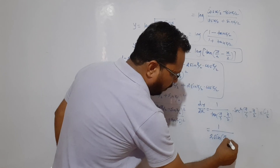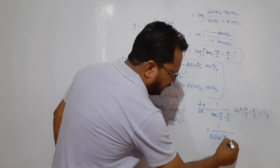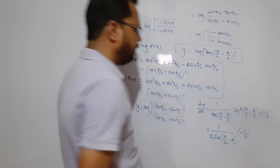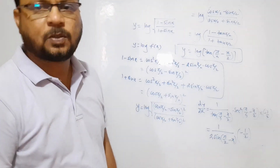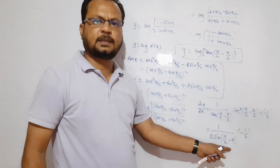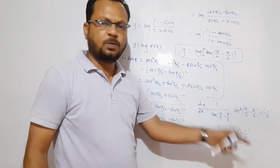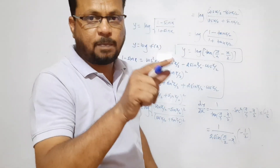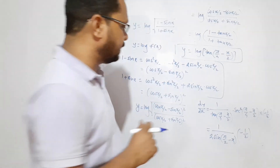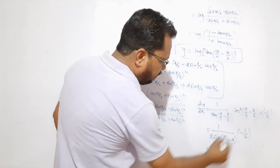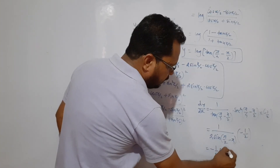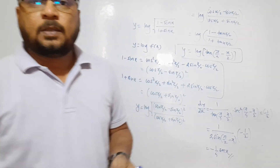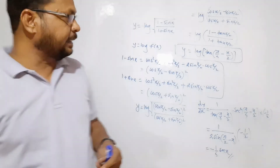Simplifying: using sin(π/2 - x) = cosx, we get 1/(2sin(π/4 - x/2)·cos(π/4 - x/2)) × (-1/2). This equals -1/(2sinx) × (1/2) ... ultimately giving dy/dx = -1/(2cosx) or -1/2 secx. This is how you can solve problems involving trigonometric composite functions.